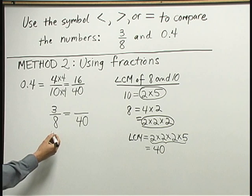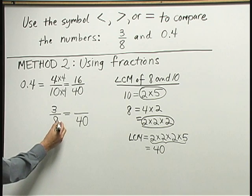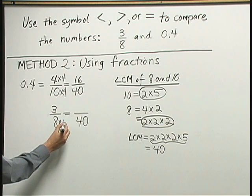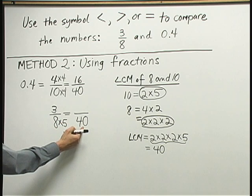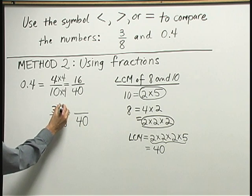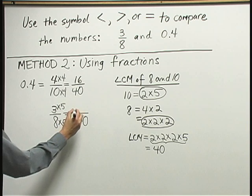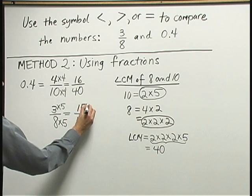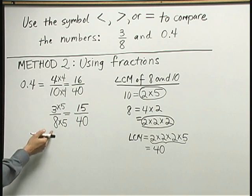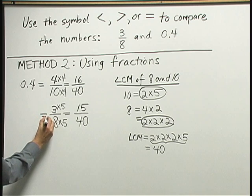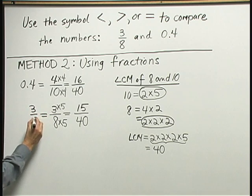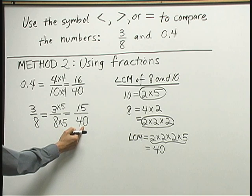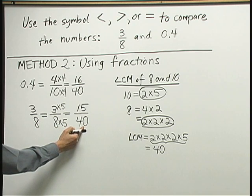Now look at the 3 eighths down below. 8 times 5 will give me 40 down below. So up above, I multiply 3 times 5 to get 15. My 3 eighths, let's rewrite that out in front. My 3 eighths is equivalent to 15 fortieths.